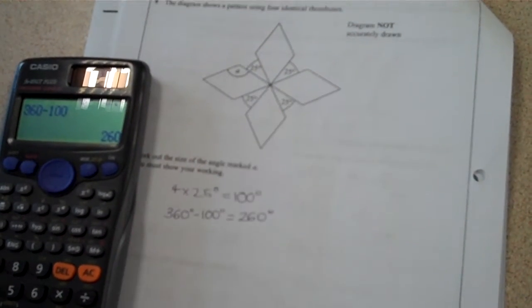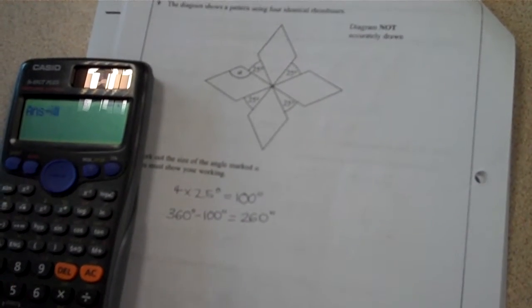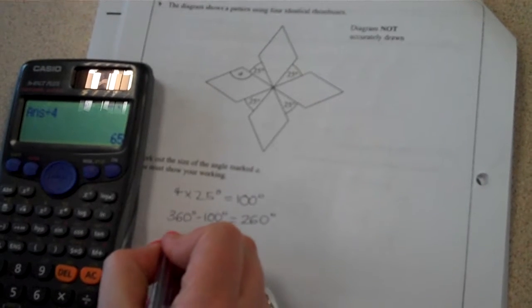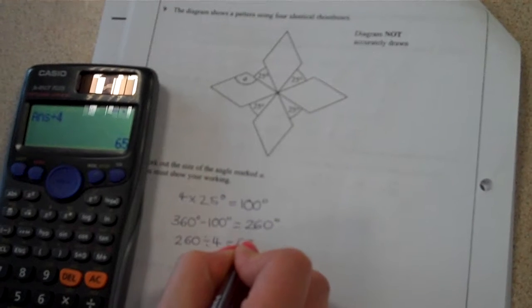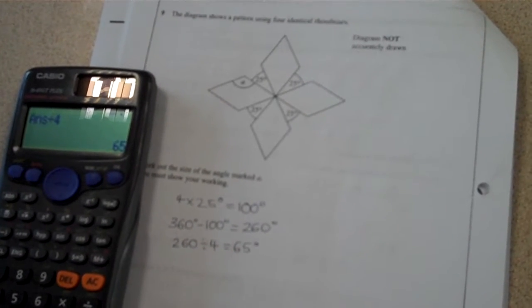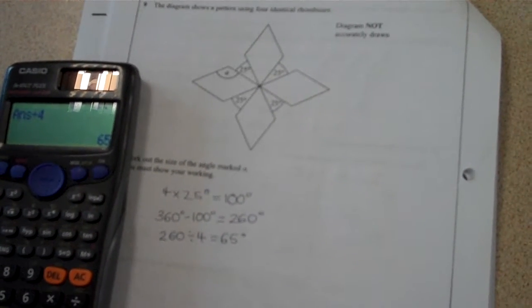That's got to be shared between these four equally, so if I divide that by four, that then tells me that each of those angles is 65 degrees. And make sure, as I said before, that you do write down everything that you do on your calculator.